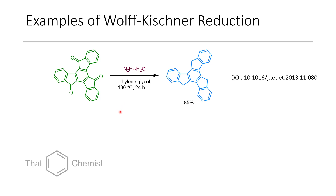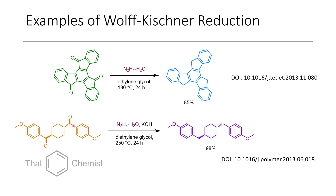Some examples of the Wolff-Kishner include the reduction of a triketone to a tricyclic product — indane, as I recall — and the treatment of another ketone with hydrazine to form the fully reduced indane product.